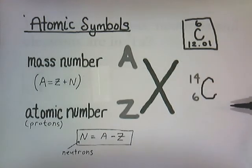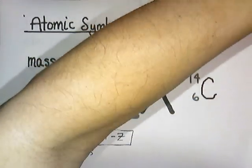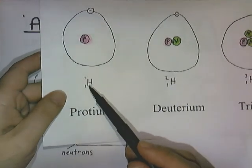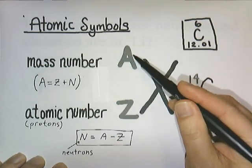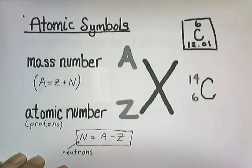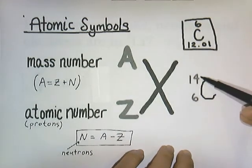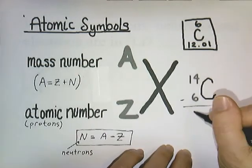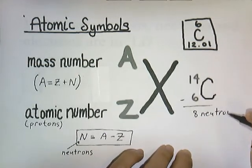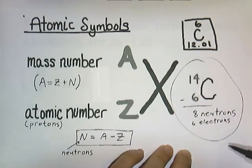The notation for nuclides uses the symbol of the element with the mass number on top and the atomic number on the bottom. X represents the symbol of the element, A is the number of protons and neutrons, and Z is the atomic number. For example, carbon-14 has a mass number of 14 and an atomic number of 6. Subtracting 14 minus 6 gives 8 neutrons, and it also has 6 protons and 6 electrons.